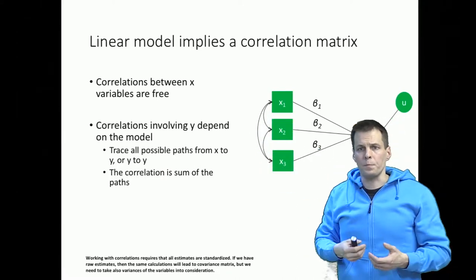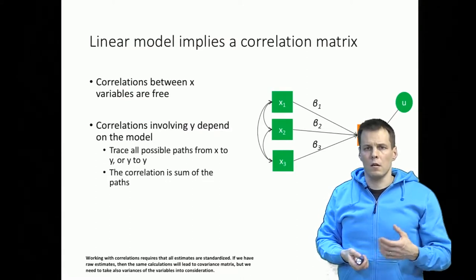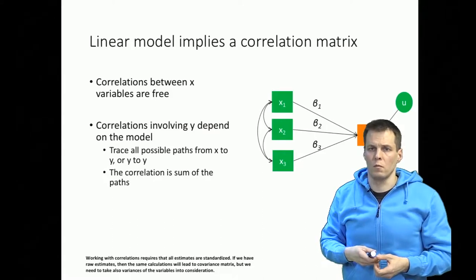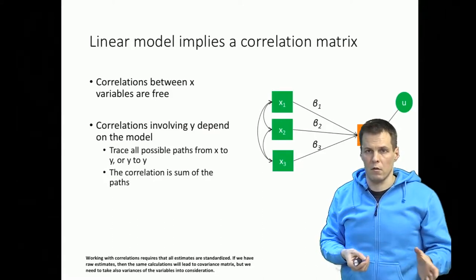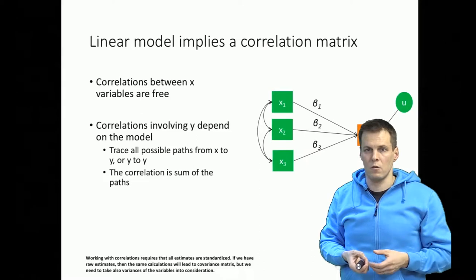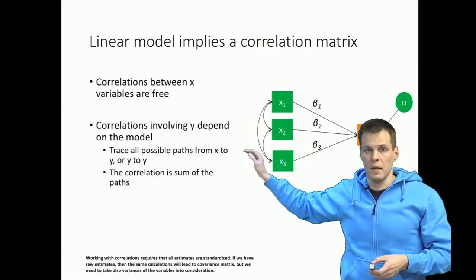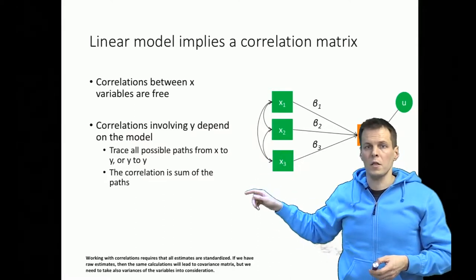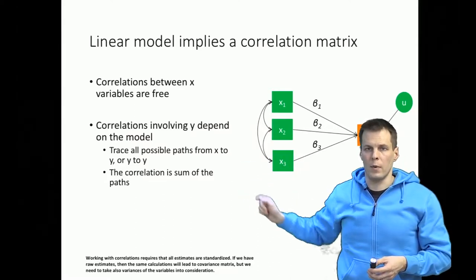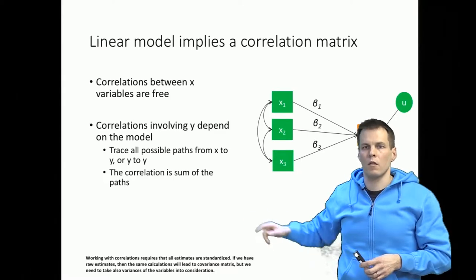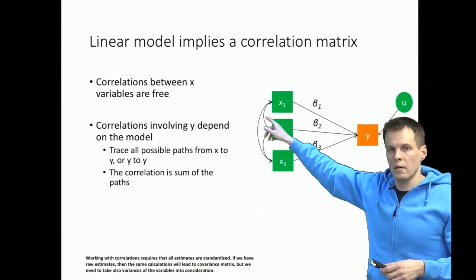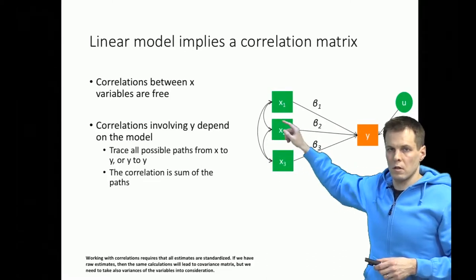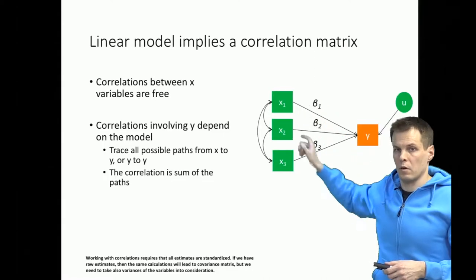The correlation is shown by a two-headed curved arrow. This principle says that the correlations between the x variables are what the data gives us — so we calculate the correlation of x1 and x2 and that is taken as it is. We say those correlations are free. But the correlations involving y depend on the model — they are implied by the model.